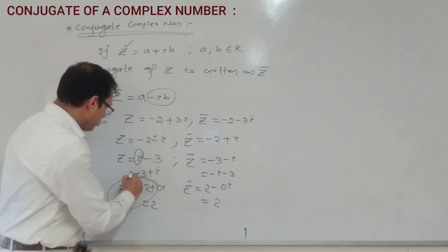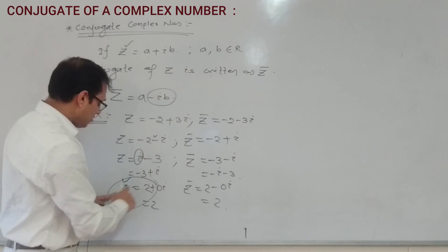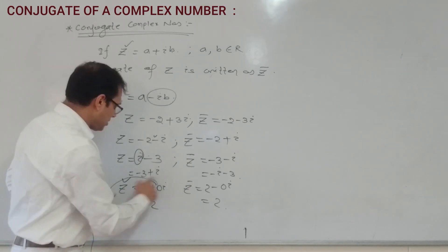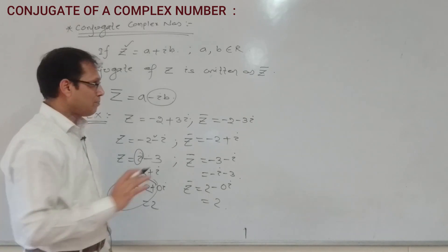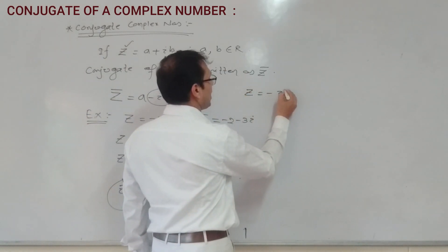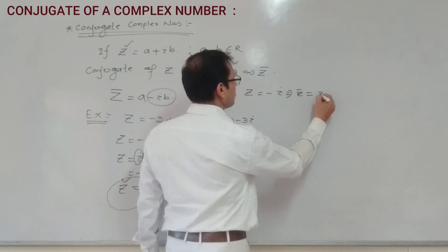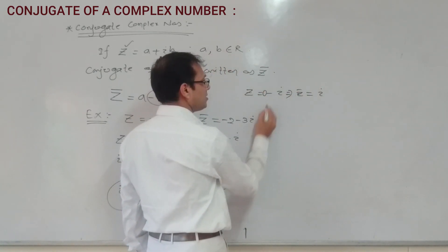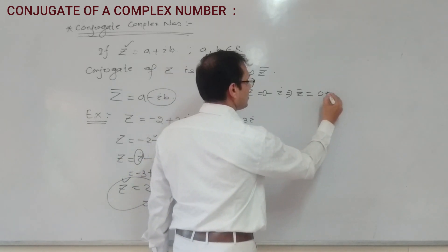So the conjugate of a purely real complex number is the number itself. Suppose Z is equal to minus i, then Z bar is equal to plus i. Because minus i can be written as 0 minus i, and its conjugate is 0 plus i.